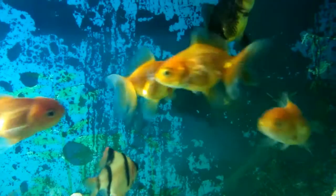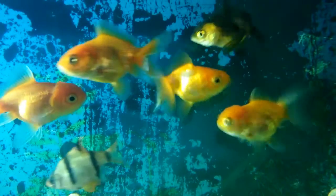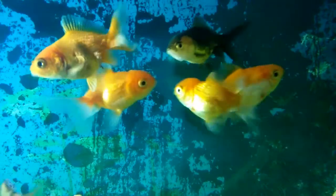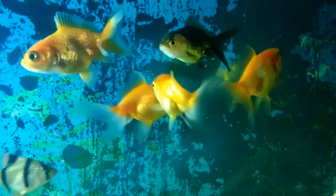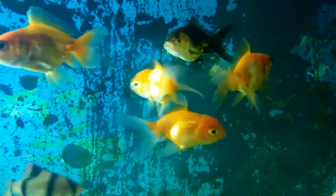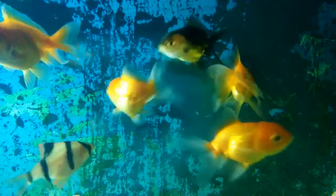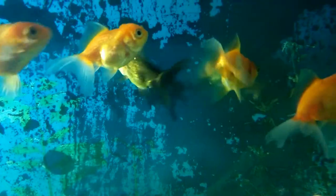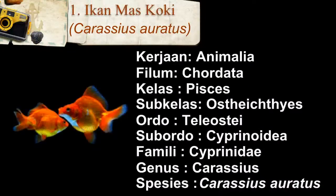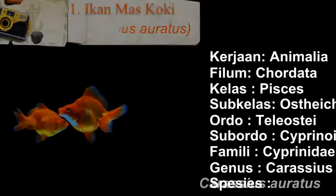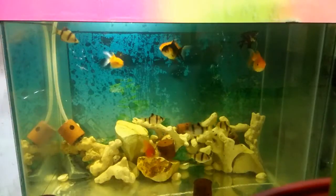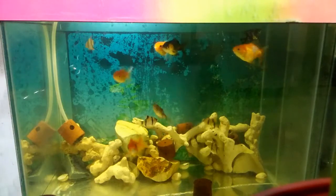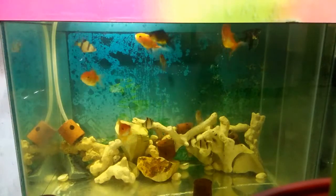sirip dada, sirip perut, dan sirip ekor. Ikan maskoki ini mempunyai ciri khas, yaitu bentuk badan yang pendek dan kepala yang besar.